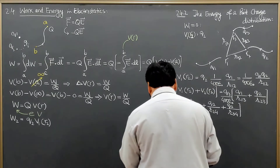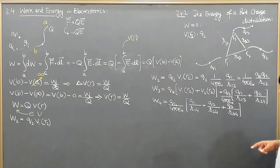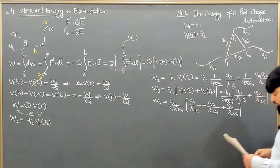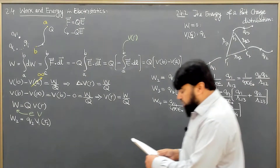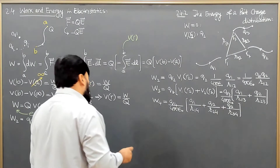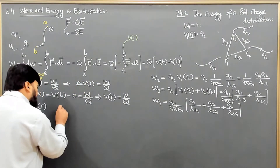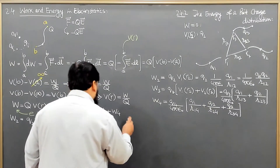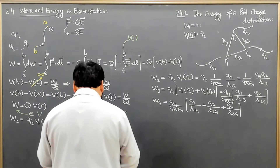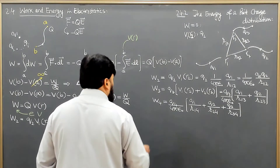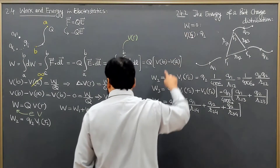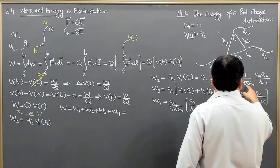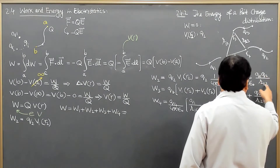The work that we will do in bringing the fourth charge Q4 is this much. So for a collection of these four charges, the total work W will be equal to W1 plus W2 plus W3 plus W4. W1 is equal to 0, and W2 is 1 over 4π epsilon naught times Q1 Q2 over R12.